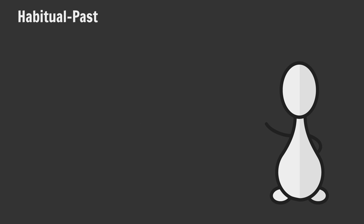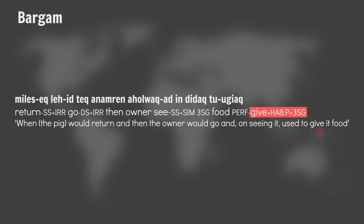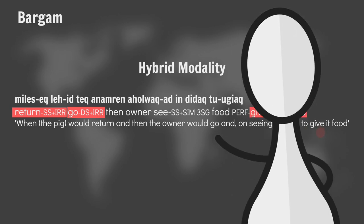And finally, some languages treat habitual actions in the past as modal — like how in English one might say 'we would go for a walk most weekends.' In Bargam, the habitual past is treated as unreal, which is weird given that the past is anything but. But it turns out this statement is both real and unreal — an example of hybrid modality. The 'real' part is that the speaker has asserted the habitual action did occur; the 'unreal' part is that the statement lacks specific temporal references, specific evidence, etc. Bargam — brilliantly bonkers.